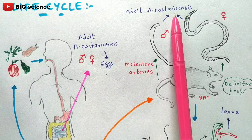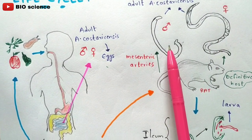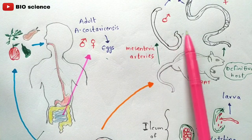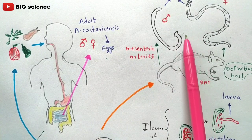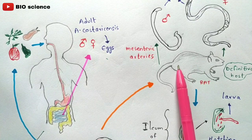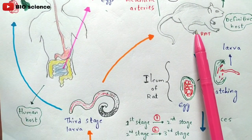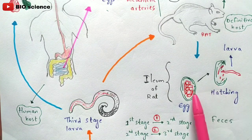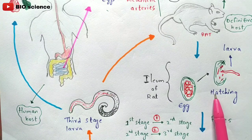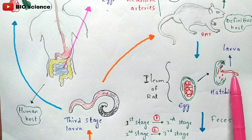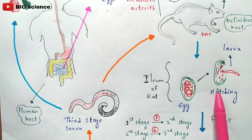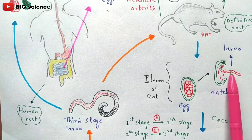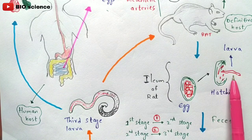Both male and female worms undergo copulation and release eggs. These eggs move towards the ileum region of the rat. Once the eggs reach the ileum, hatching occurs and first stage larvae are produced. The entire hatching process is completed in the ileum of the rat, from which first stage larvae emerge.